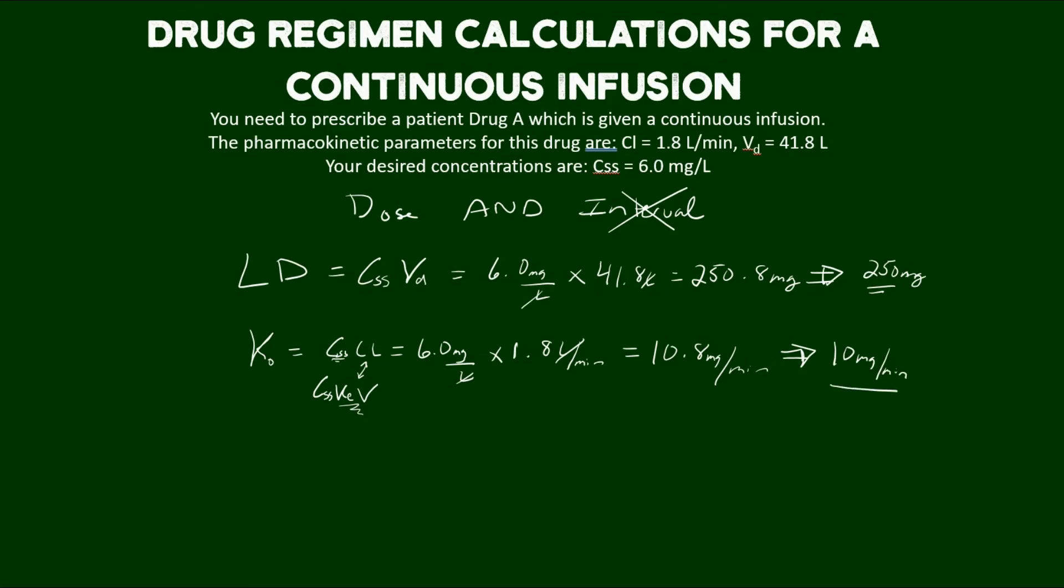A continuous infusion, as you can see, because there's no interval that needs to be calculated is pretty straightforward. Figuring out a loading dose of 250 milligrams in this situation, we'd follow it by continuous infusion of 10 milligrams per minute to achieve our steady state desired level of 6.0 milligrams per liter. Thank you for your attention.